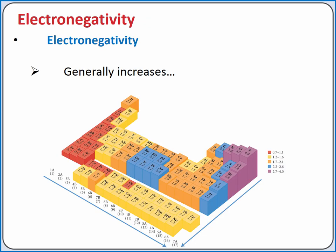Electronegativity is an atom's ability to attract electrons to itself in a chemical bond. Electronegativity generally increases going up and to the right in the periodic table, with fluorine having the highest electronegativity of 4.0 and the other elements scaling down from there.